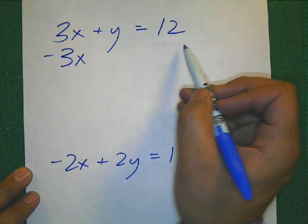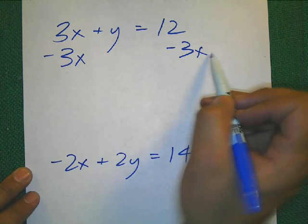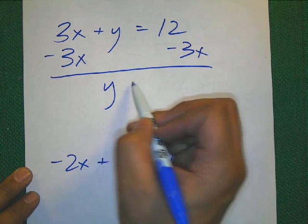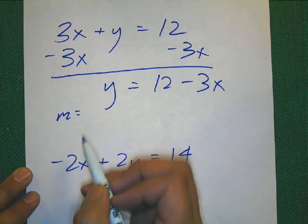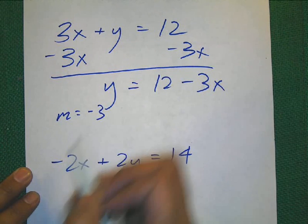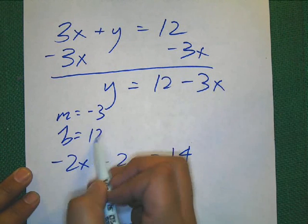Subtract 3x. If I do it to one side, I need to... That's right. Do it to the other. 12 minus 3x. Your slope is negative 3. Your intercept is 12. Very good.